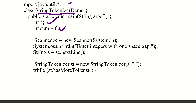Sum is initialized to 0. We then enter integers with one space gap. Once the line of integers is ready, we create a StringTokenizer object: StringTokenizer st = new StringTokenizer(sd), where sd is the string variable storing the input, and space is used as the delimiter.